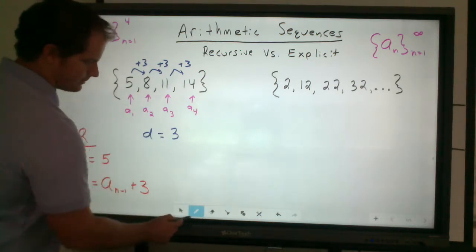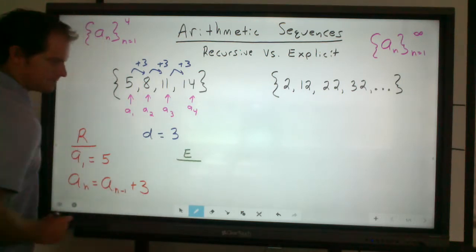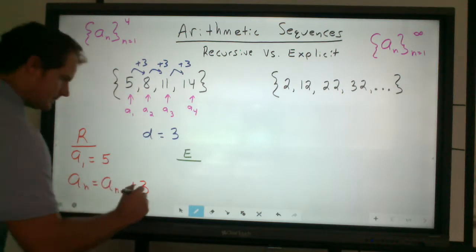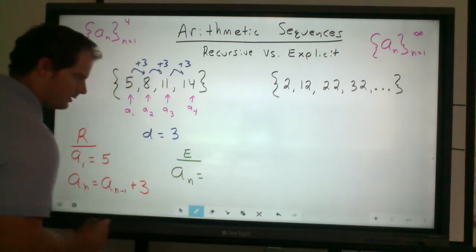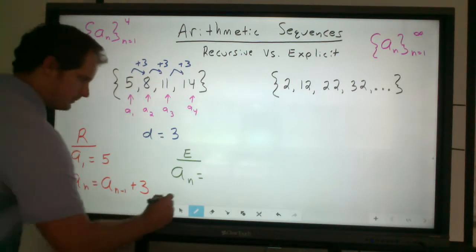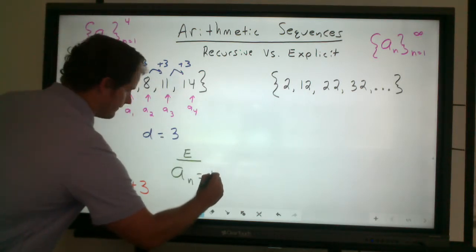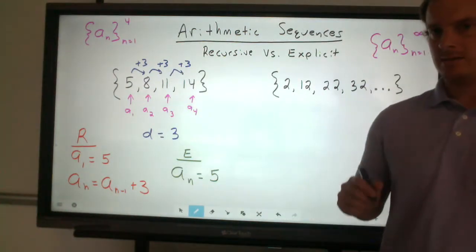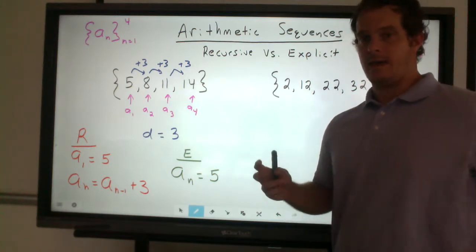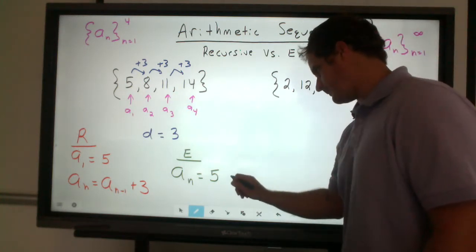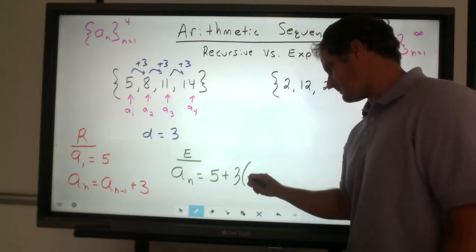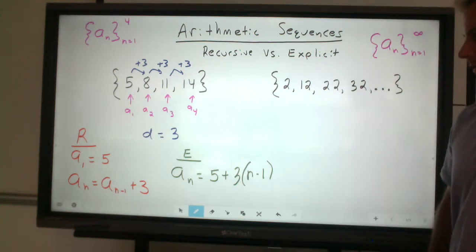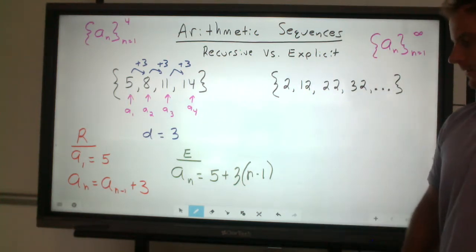If we're going to jump to explicit, explicit has kind of a similar setup, slightly different though. This states that if we look for any nth term, we do look at the first term, which happens to be in this case 5, and we add on the product of the common difference and that previous value. So this will be 3 times that n minus 1. And that's kind of the explicit formula for this arithmetic sequence.